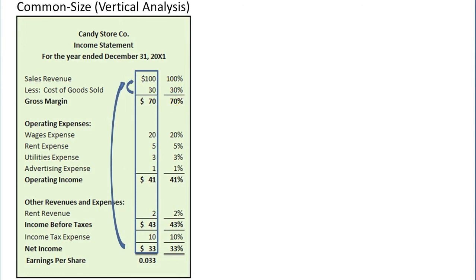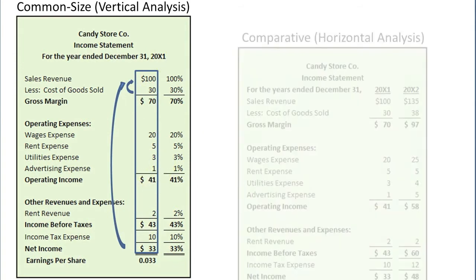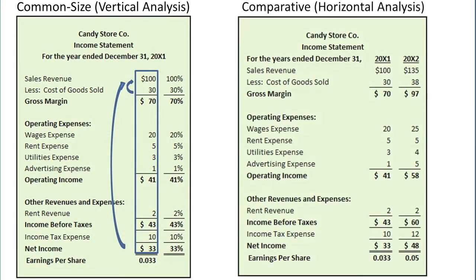The gross margin ratio, also known as the gross profit ratio, comes from the math involved in a vertical analysis. Another method of analyzing a company's income statement is a horizontal analysis using a comparative income statement, as provided by Candy Store Company here.